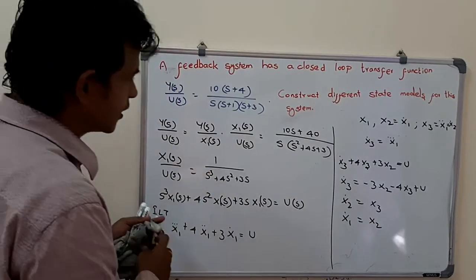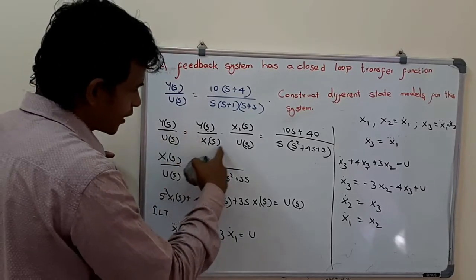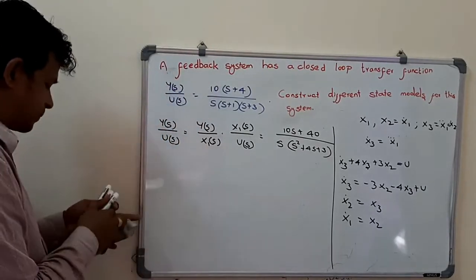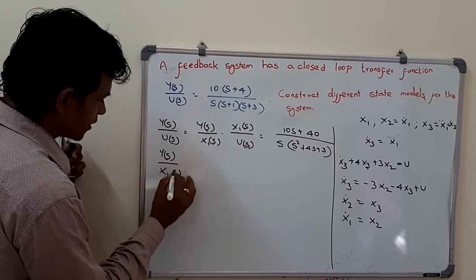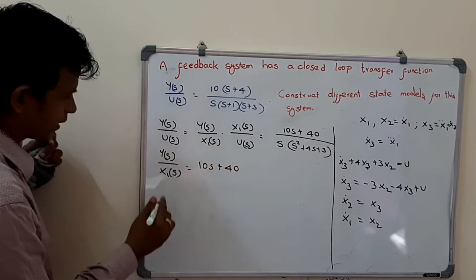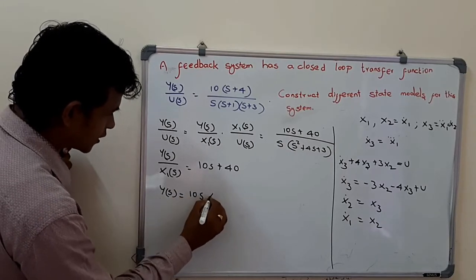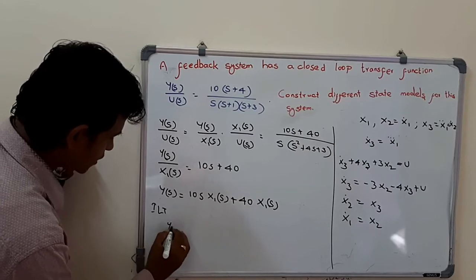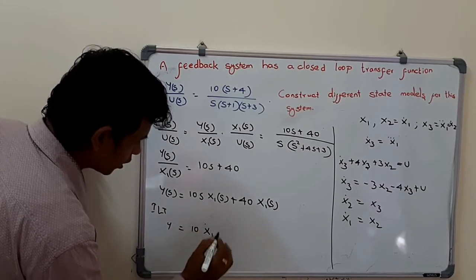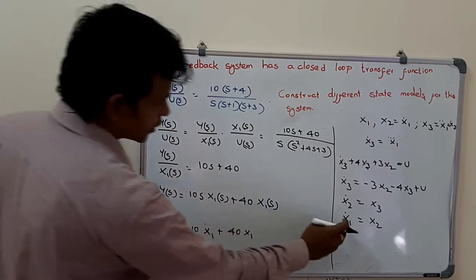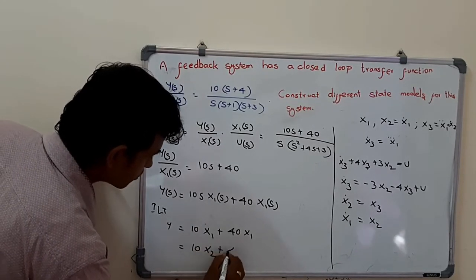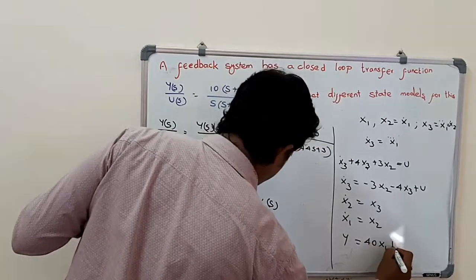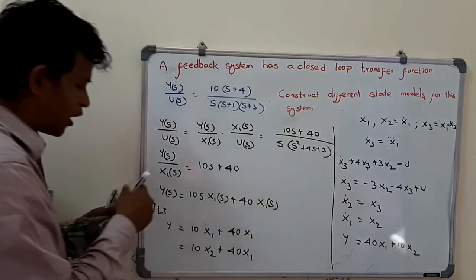Now we derive the equation for output by equating this part with the numerator. Y(s) divided by x1(s) equals 10s + 40. Cross multiplying: Y(s) = 10 times s times x1(s) + 40 times x1(s). Taking inverse Laplace transform: y = 10 times x1 dot + 40 times x1. Since x1 dot = x2, this becomes y = 10x2 + 40x1.